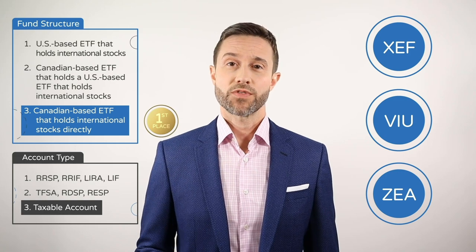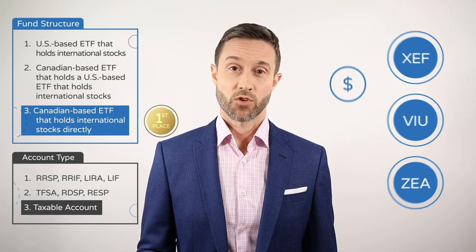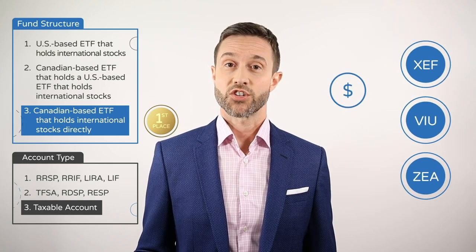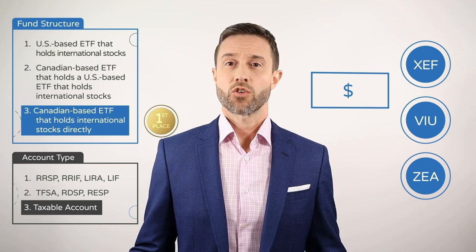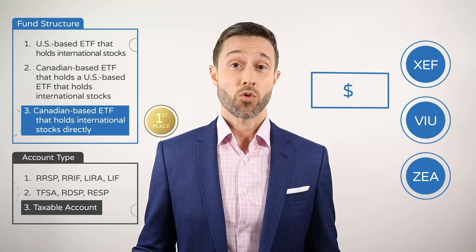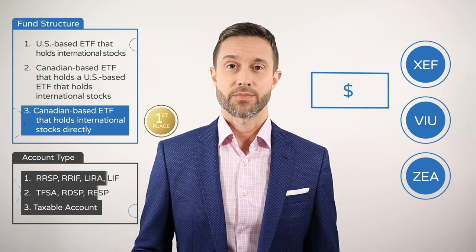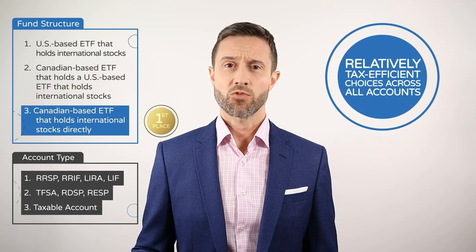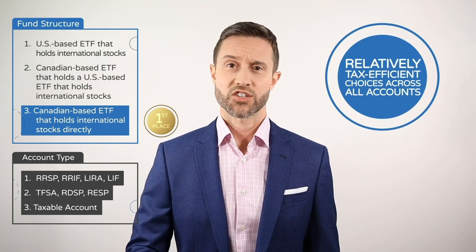If you don't feel like messing around with Norbert's Gambit to convert your Canadian dollars to US dollars, you may want to just hold XEF, VIU, or ZEA in any account type, as they are all relatively tax-efficient choices across all accounts.